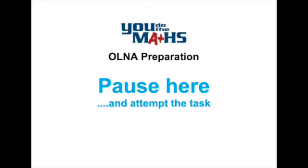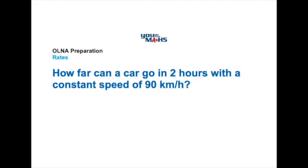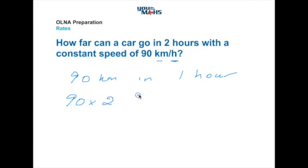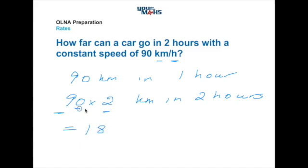Here's another opportunity to pause and have a go at the question for yourself before we look at the solution. Reading through this question, we've got a speed of 90 kilometres per hour, meaning we travel 90 kilometres in one hour. Assuming constant speed, we multiply that by 2 to work out how many kilometres we travel in two hours. Nine twos are 18, place the extra zero at the end, so the answer is 180 kilometres.